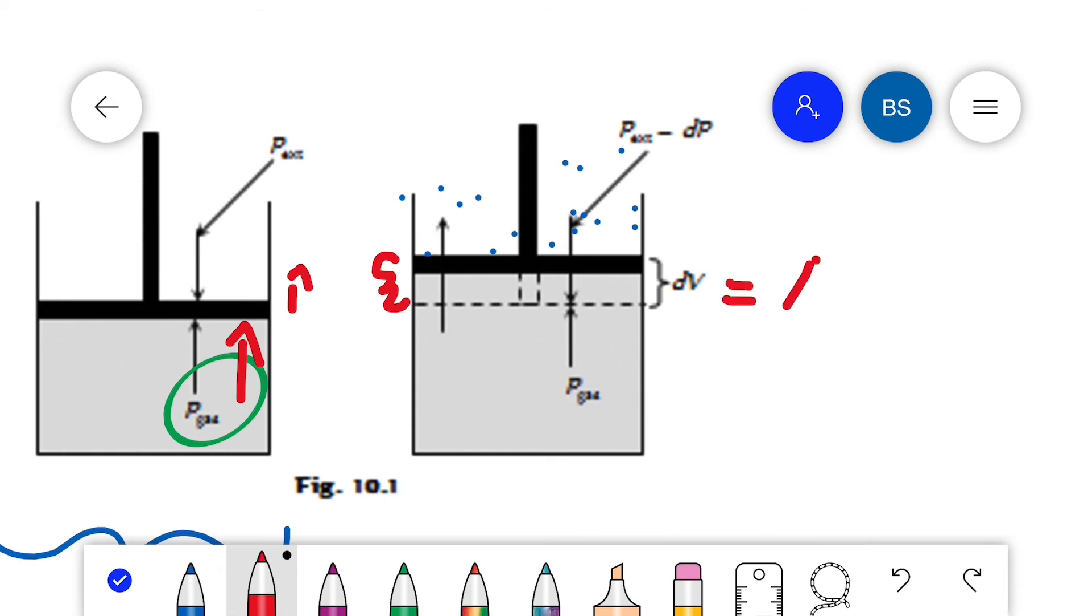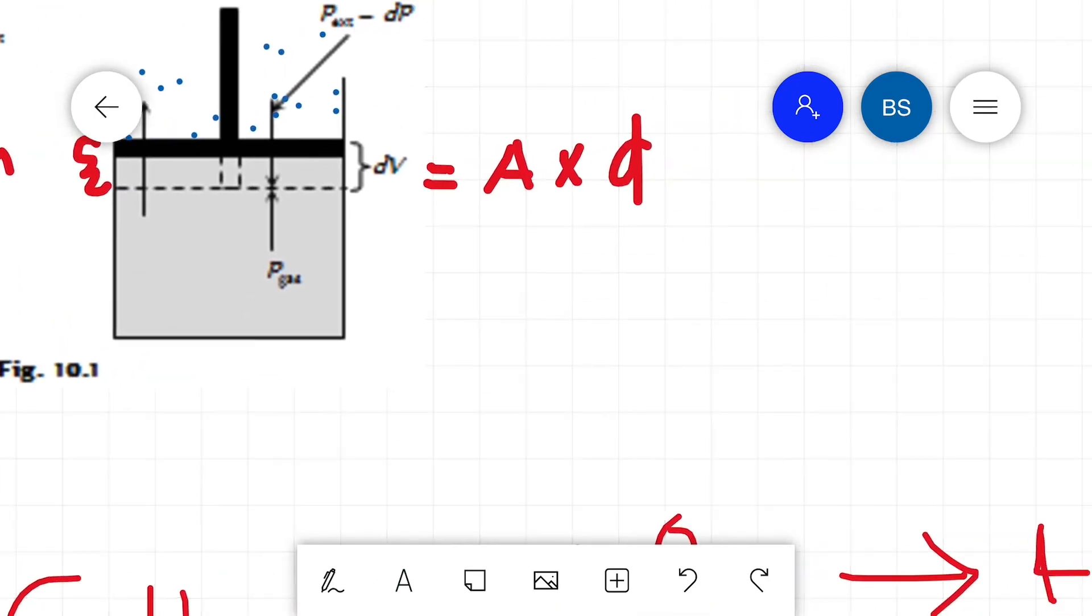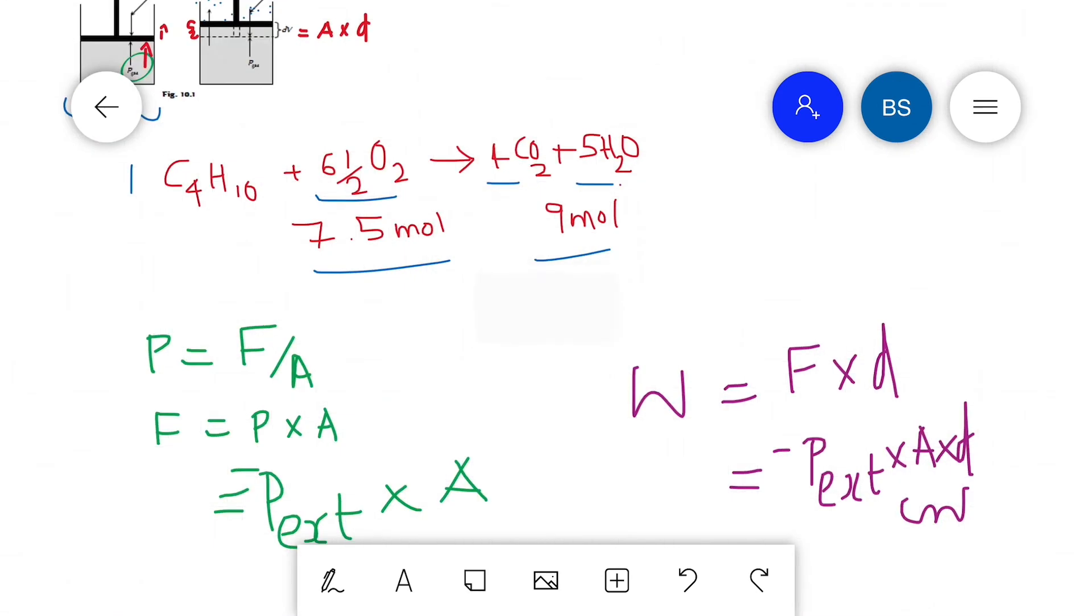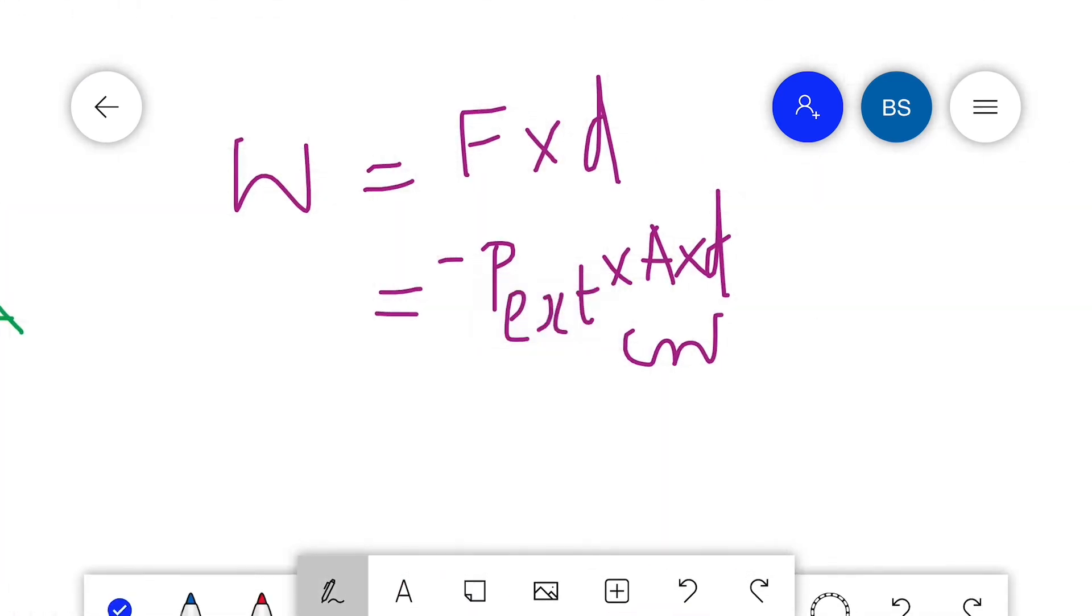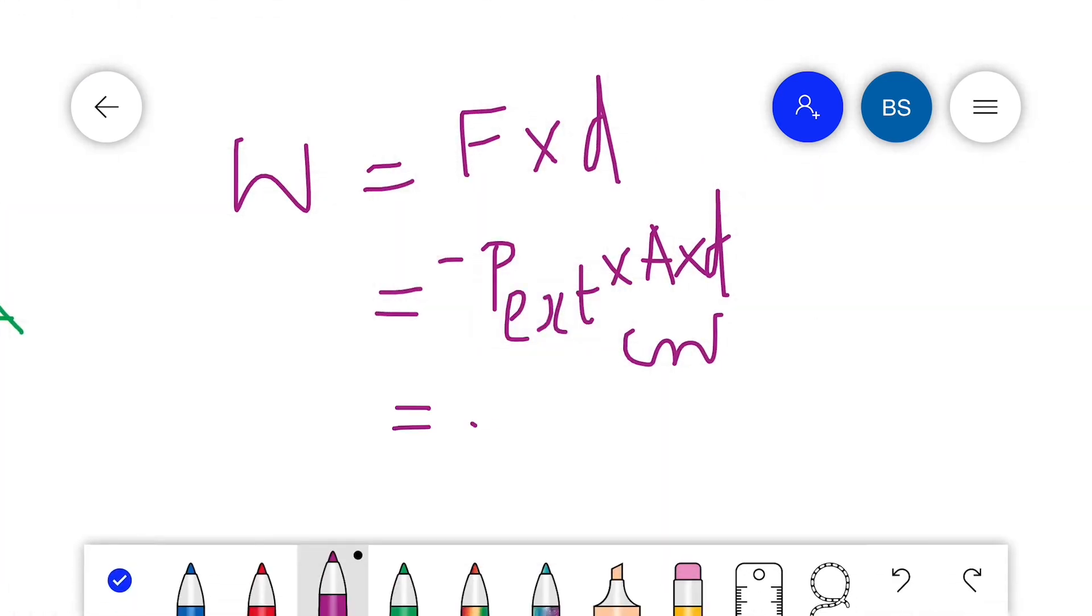What is area times displacement? This change in volume gives the change in volume of the gas. So the equation becomes W equals negative P external times delta V.